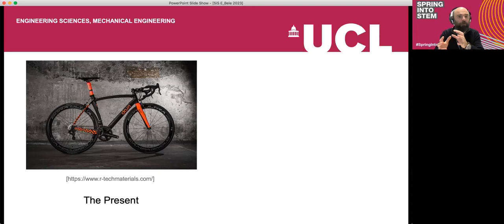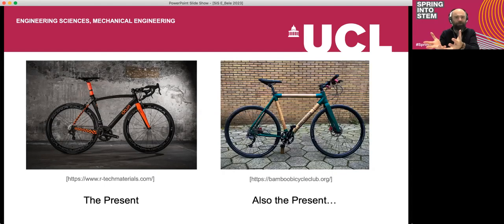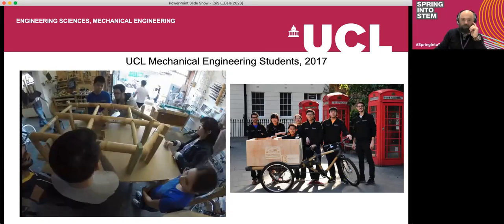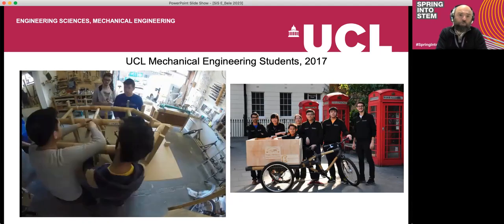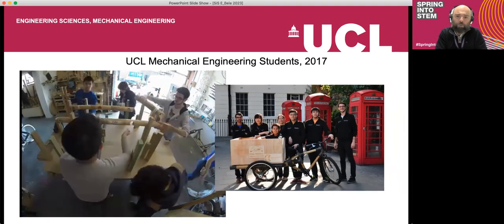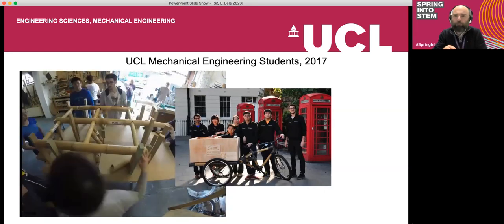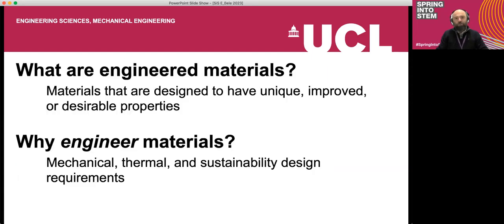This other example is a bicycle made from bamboo stocks joined together. This is something you see not so much in the streets but is being used recently, going after the concept of sustainable design. Here are our students in 2017 designing a cargo bicycle. They went through the entire process from designing for reliability and strength to designing for manufacturing, looking at the joints, doing the structural analysis.